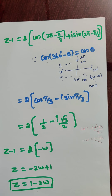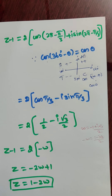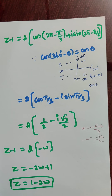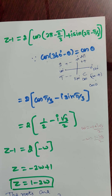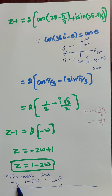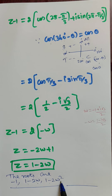So the three roots are: first root minus 1, second root 1 minus 2 omega, and third root 1 minus 2 omega square. These are the roots of the given equation. This is the answer for this problem. Thank you, children.